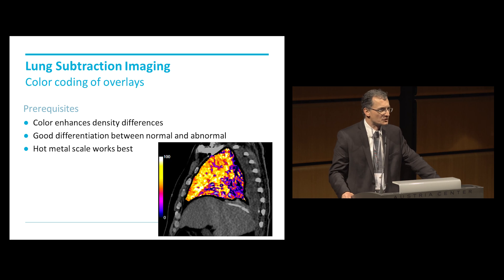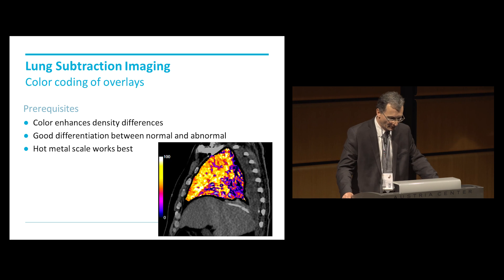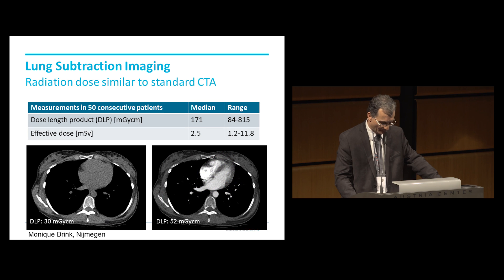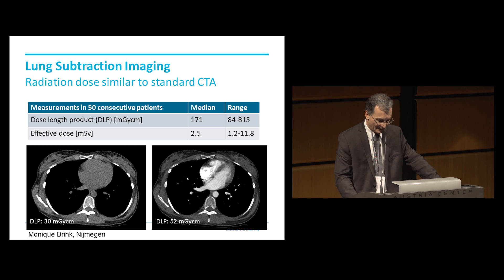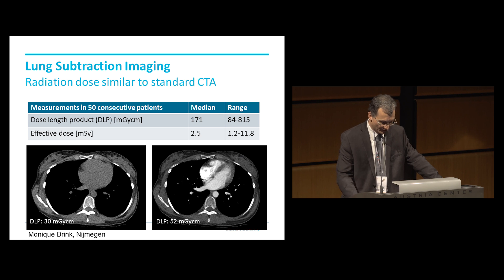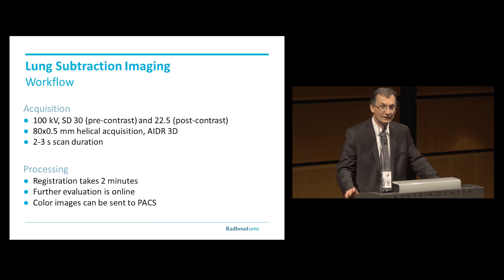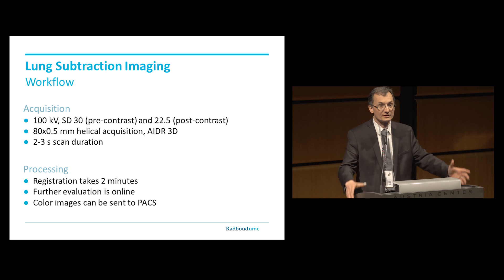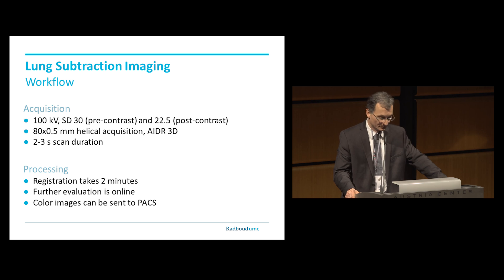The differences in density are small, so in order to make sure that you can see those differences, you need a color coding. We found that a hot metal scale works best, and we remove the vessels before the color coding is applied so that the vessels don't disturb the coloring of the lung parenchyma. If you look at dose, it is quite acceptable — the median was 2.5 millisievert. The reason it was that high is because we had to do multiple scans due to motion artifacts and wrong timing. In general, the dose is identical to our classic standard CTA, because we increased our noise index — SD value of 30 for pre-contrast scans and SD value of 22.5 for post-contrast scans — giving a very competitive total radiation dose.